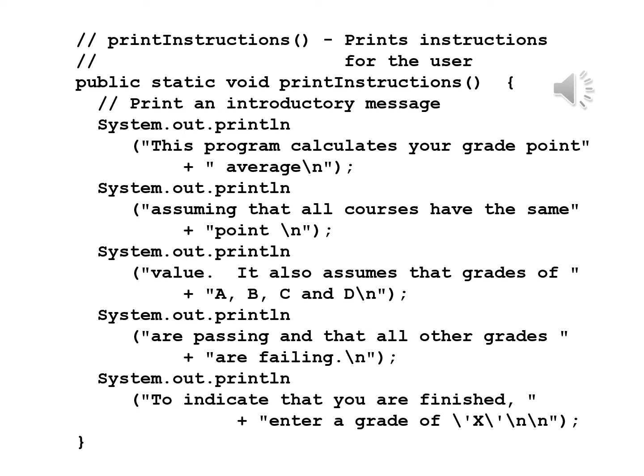We begin the printInstructions method: print instructions for the user. public static void printInstructions() with an open brace. Now a comment: print an introductory message. System.out.println("This program calculates your grade point average"); System.out.println("assuming that all courses have the same point"); System.out.println("value. It also assumes that grades of A, B, C, and D"); System.out.println("are passing and that all other grades are failing."); System.out.println("To indicate that you are finished, enter grade of 'x'."). Note that there is a blank line at the end of the last statement to separate this from what comes afterward.